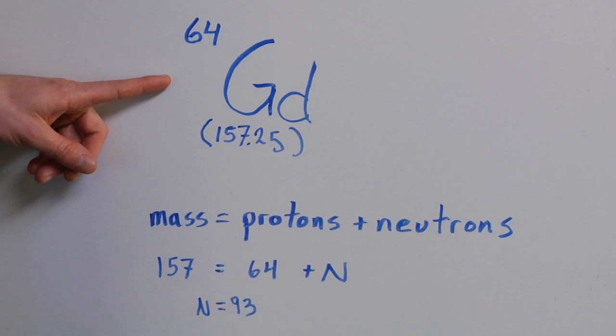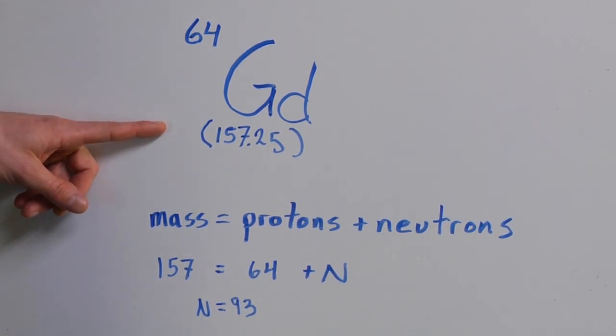So gadolinium, element 64, has an atomic weight of 157.25. In order to figure out how many neutrons it has, we have to go through a couple of steps.